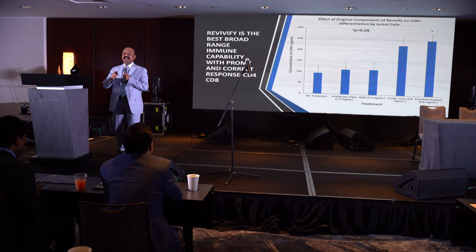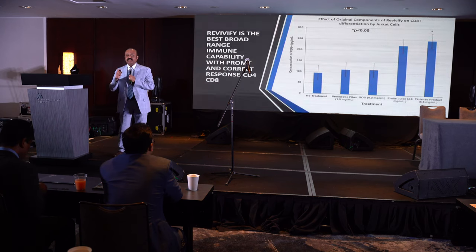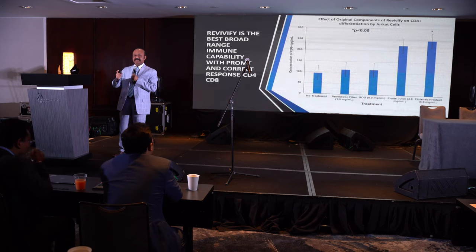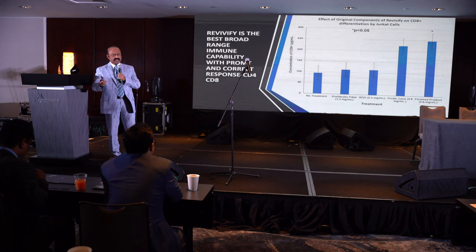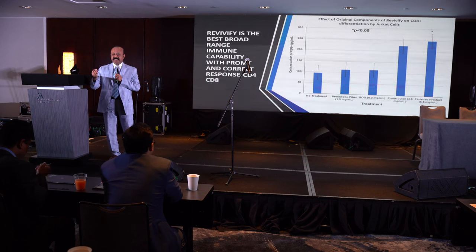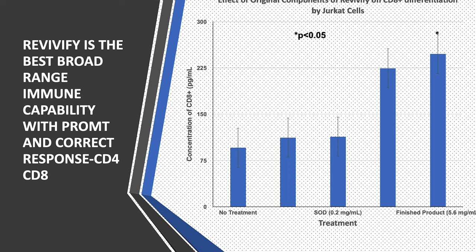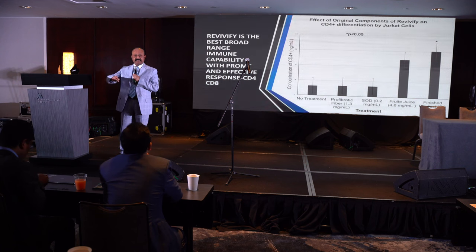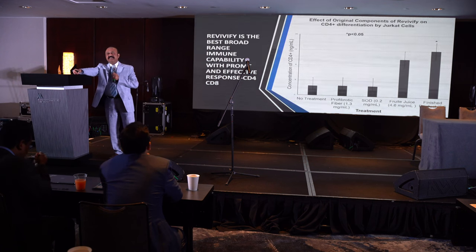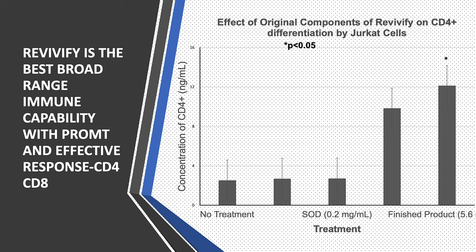This is very interesting data. We induced the Jurkat cells with the BB5 gel and we found that CD8 and CD4 are highly and significantly differentiated in the BB5-gel-treated Jurkat cells.